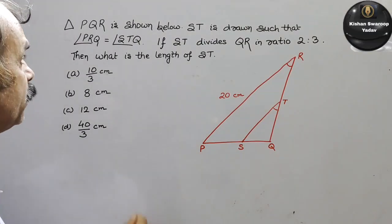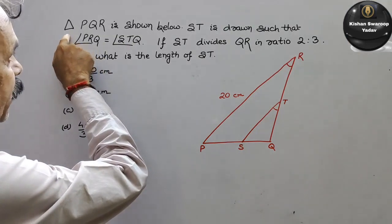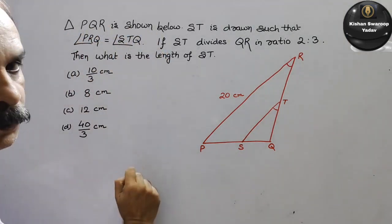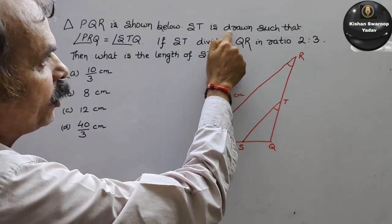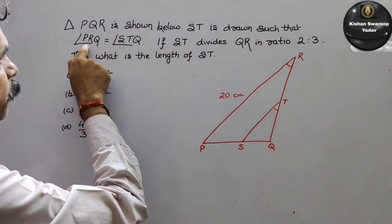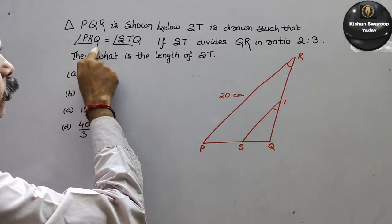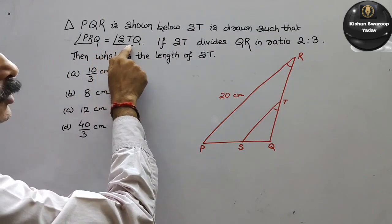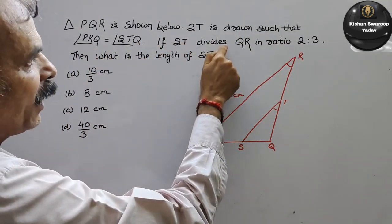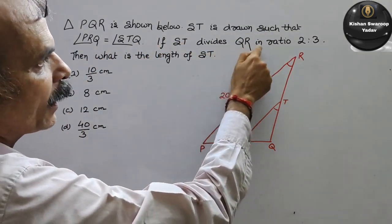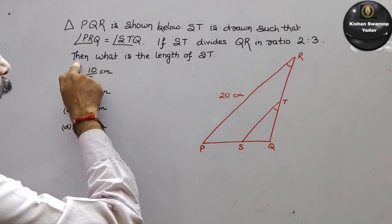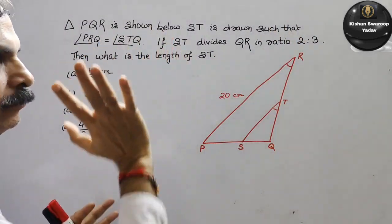Aapka question hai: Triangle PQR is shown below. ST is drawn such that angle PRQ is equal to angle STQ. If ST divides QR in ratio 2:3, then what is the length of ST?